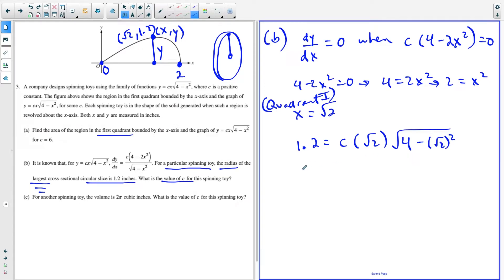So we're going to have 1.2 equals C times square root of two times the square root of four minus square root of two squared. And now it's just a little bit of algebra. But once again, the concept is what made this question a bit tricky. So now I have four minus two gives me another radical two. So I have 1.2 equals two times C, and then just divide both sides by two. So C is equal to 0.6.